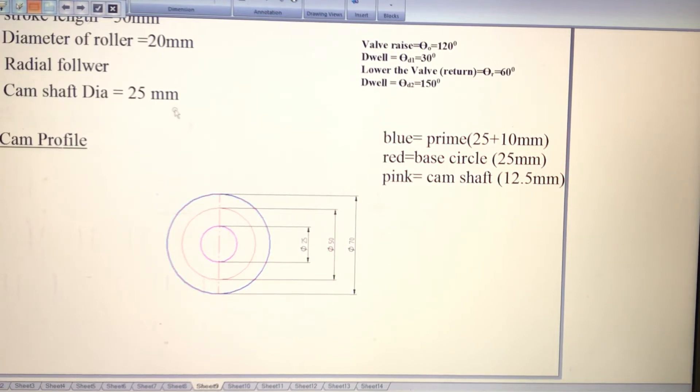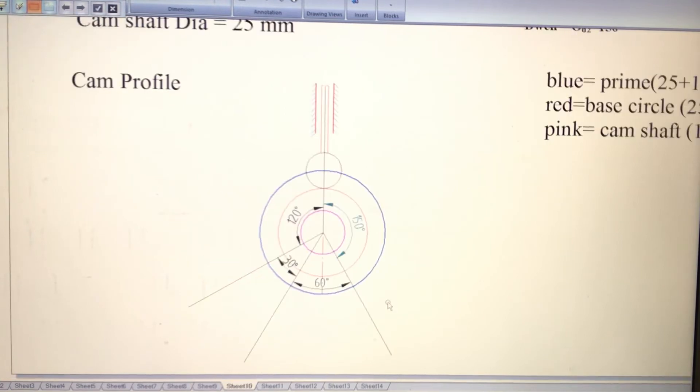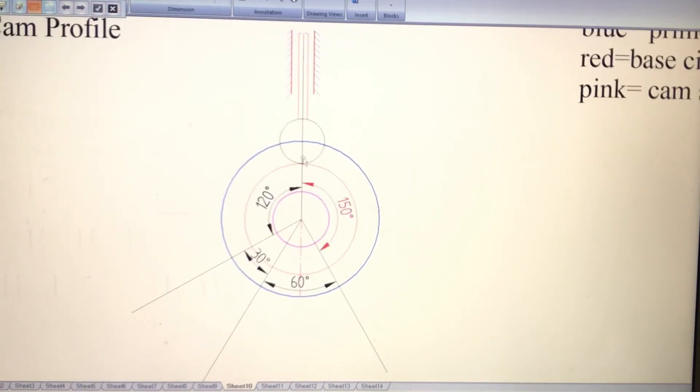It is very easy: first consider the radius of base circle, that is 25 mm, plus radius of roller. The roller diameter is 20 mm, so radius becomes 10. So 25 plus 10 equals 35 mm, the radius of the prime circle, and diameter is 70 mm. You need to create three circles with the same center of rotation.